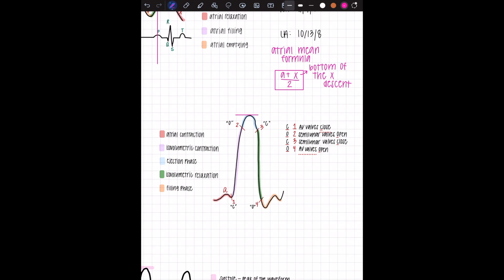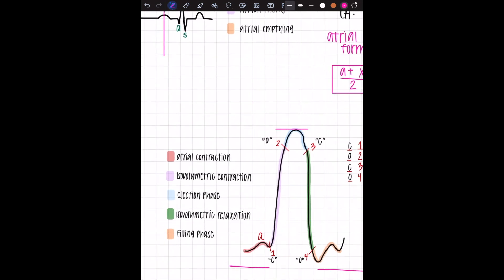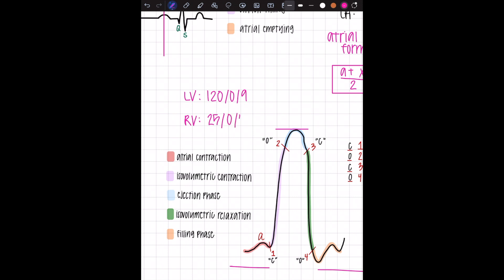Moving on to the ventricular waveform. This is both for the RV and for the LV, right ventricle and left ventricle. We have three phases we're going to look at for the three numbers we're going to report. Let's go ahead and remember our normals. LV is 120-0-9, RV is 25-0-4.